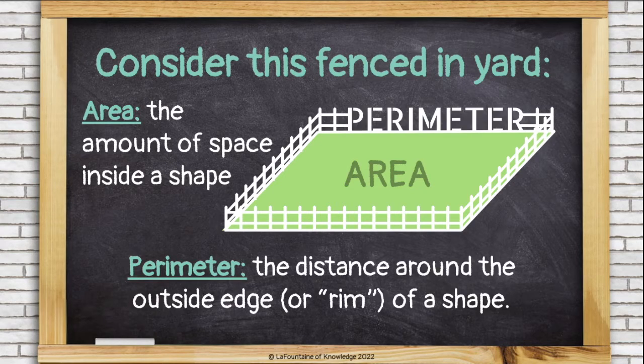Perimeter is the distance around the outside edge, or rim, of a shape. The fence is the perimeter of this yard.